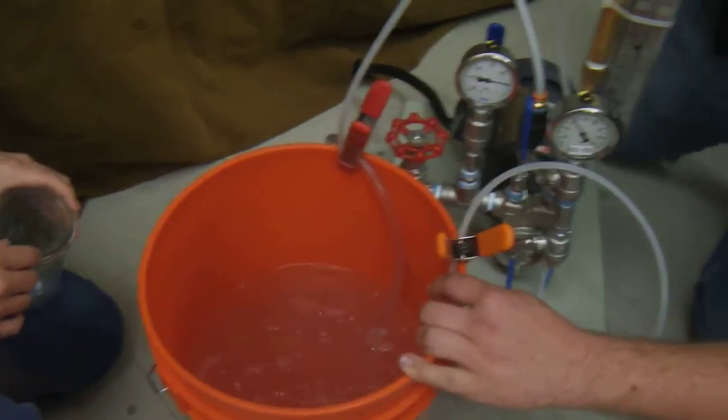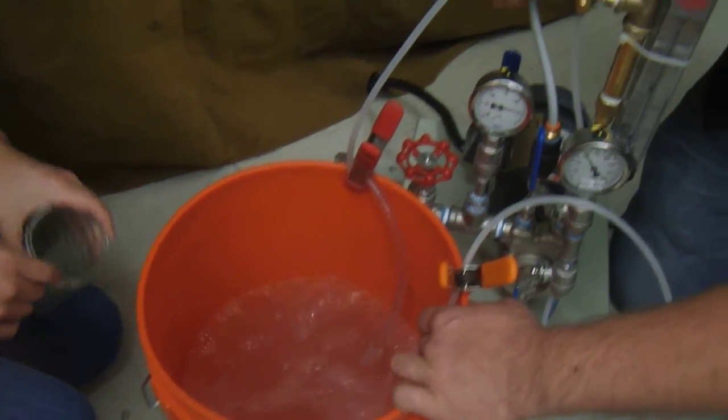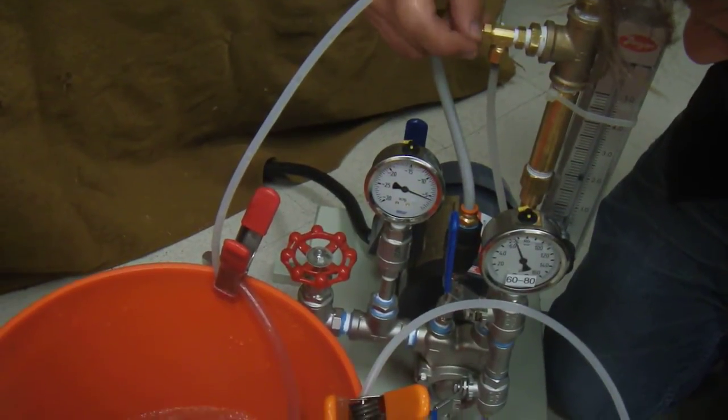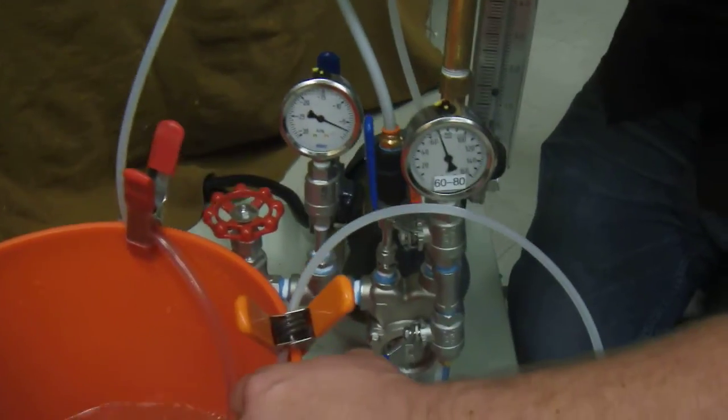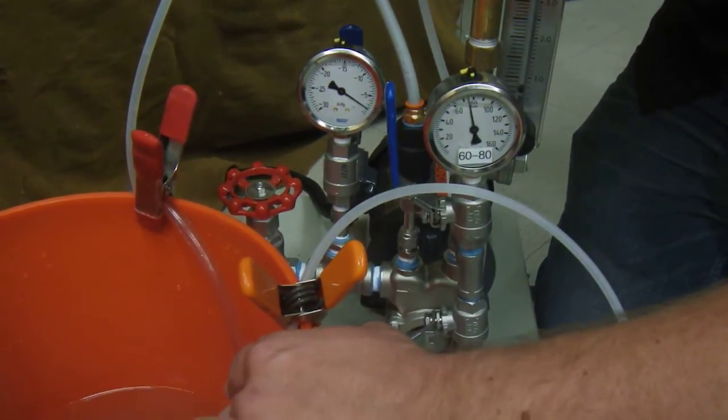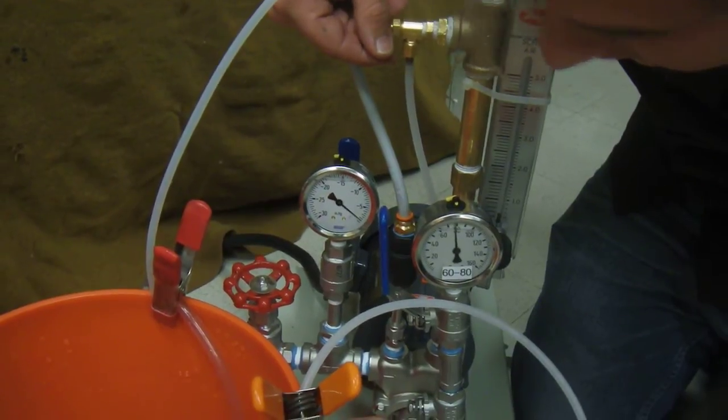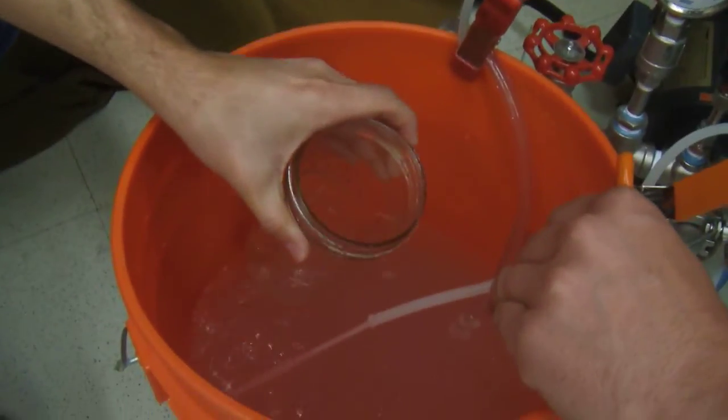What I'm going to do here is I'm going to reduce the flow rate by reducing the outlet valve here. This is going to cause the pressure to increase. So I'm going to stop when it hits 80. Here we are. Alright, go ahead.